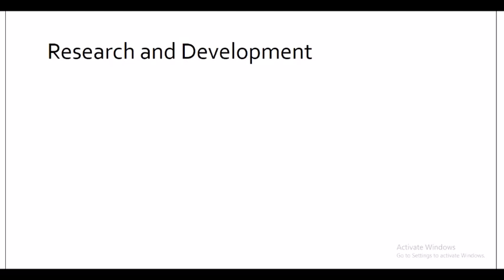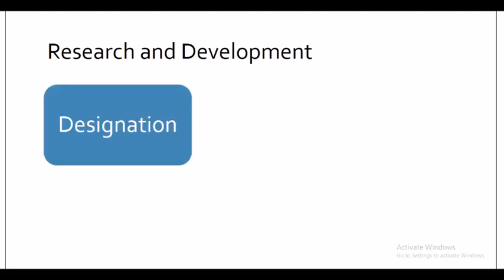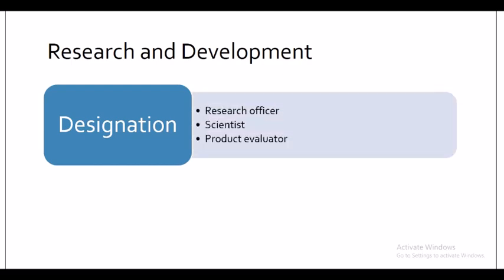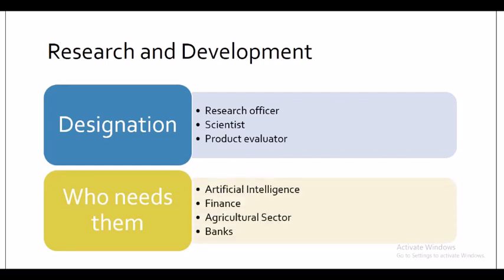In research and development, which exists in almost every field, your designation will be research officer, scientist, or product evaluator. Some fields that are repeatedly hiring statisticians are artificial intelligence, finance, agriculture, and banking. These are the career options if you understand the concepts of statistics and are willing to take your career to a new level.